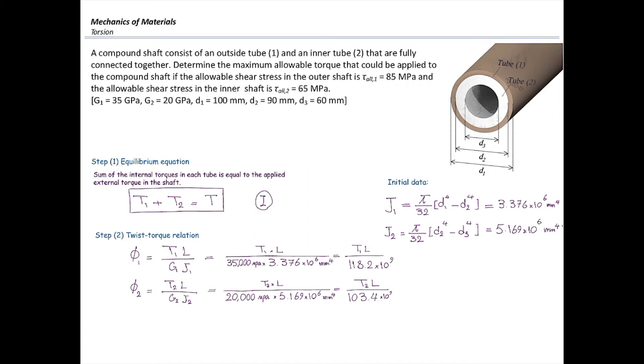So far it's very straightforward, similar to the steps we've done in all other indeterminate problems. Now I'm going to write down the compatibility of deformation. This is category number two when two elements are fully connected together. That means φ1 equals φ2. Plug in φ1 and φ2 from step number two. If I solve that symbolically, T1 would be J1 G1 divided by G2 J2 multiplied by T2. And then if I plug in the values, I would get another relationship between torques. This is the second equation I was looking for.